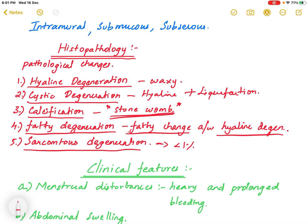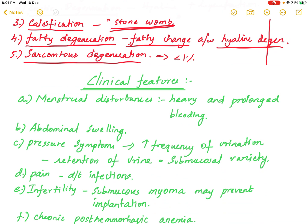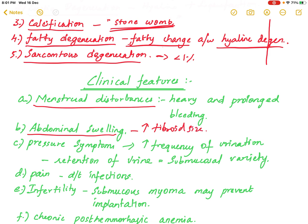The clinical features of fibroids include menstrual disturbances — heavy and prolonged bleeding, mainly seen in the intramural type due to increased vascularity, hyperplastic endometrium, and increased size of the uterine cavity. Abdominal swelling occurs as the fibroid enlarges.